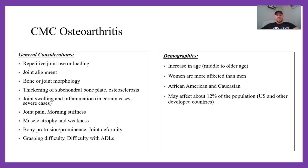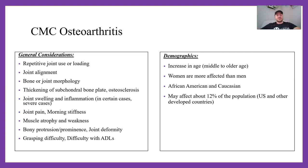CMC OA is usually caused by repetitive joint use or loading. Think of a bank teller counting money every day with that repetitive wrist-flick thumb press, or someone doing a lot of paperwork flipping pages. PTs get this a lot from doing soft tissue work — if we're not careful, we can get repetitive loading through the thumb. Demographics: more common with older age, women more affected than men, African-American and Caucasian populations more affected than other ethnicities, affecting about 12% of the population.